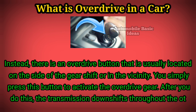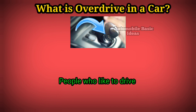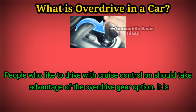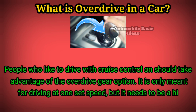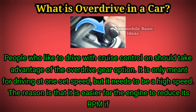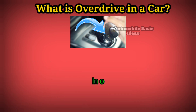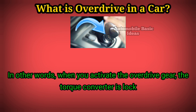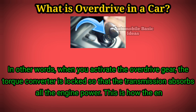After you press the button, the transmission downshifts throughout the other gears as it goes from the highest gear. People who like to drive with cruise control on should take advantage of the overdrive gear option. It is only meant for driving at one set speed, but it needs to be a high speed. The reason is that it is easier for the engine to reduce its RPM if the vehicle is traveling at a higher, consistent speed. When you activate the overdrive gear, the torque converter is locked so that the transmission absorbs all the engine power.